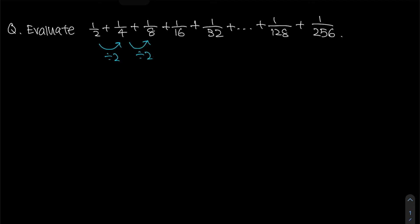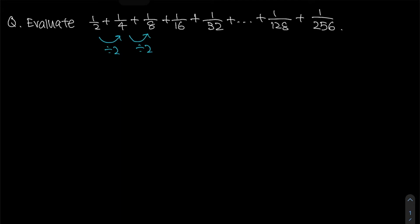So how do we do this? Notice we have half plus one quarter plus one over eight plus one over sixteen all the way until one over 256. So now what we can do is to draw a simple square. Why is a square going to help us? I am going to show you why.